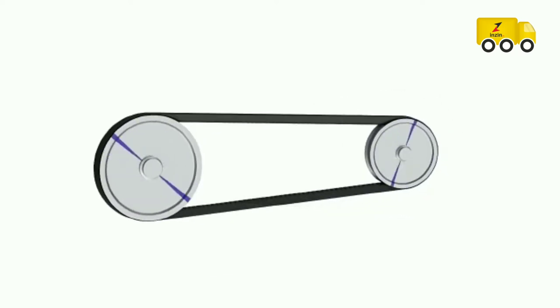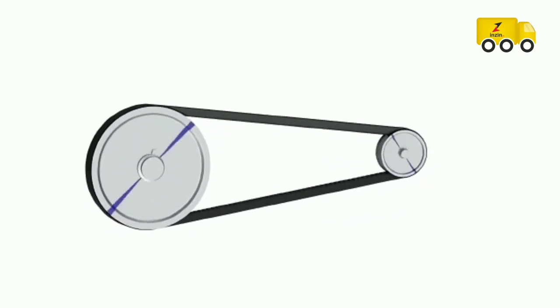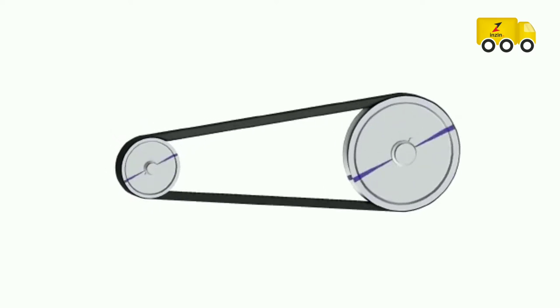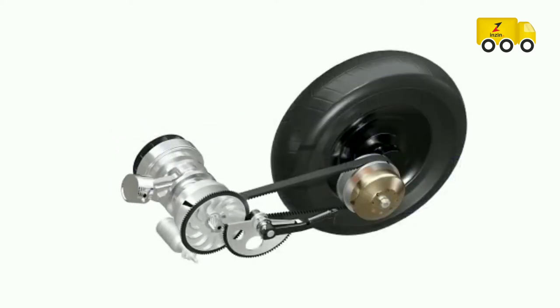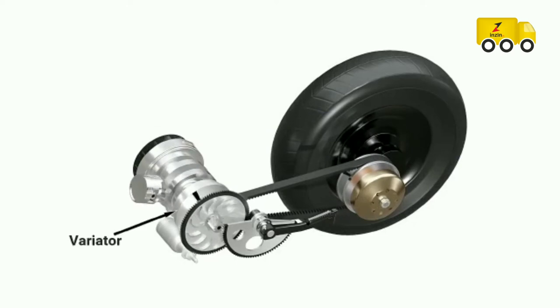It is not possible to simply change the diameters of solid pulleys as shown in this demonstration. So engineers develop certain mechanisms to obtain similar mechanical characteristics. A variator assembly is used for this purpose.